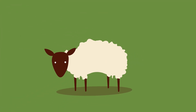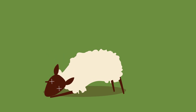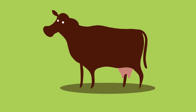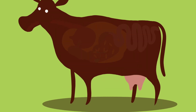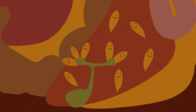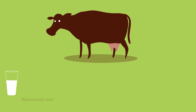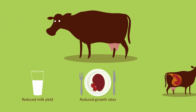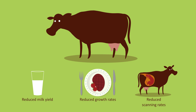Immature fluke can cause a lot of damage, especially in sheep, and can be fatal. A buildup of adult fluke in the bile ducts also causes problems, and can result in reduced weight gain, but also reduced milk yield in dairy animals, reduced growth rates, and reduced scanning rates in breeding animals.